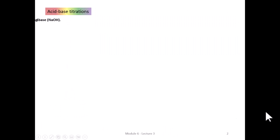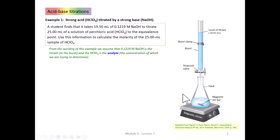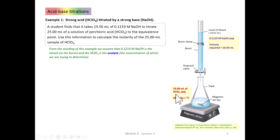Let's look at an example: a strong acid-strong base titration. A student finds that it takes 19.50 milliliters of 0.1219 molar sodium hydroxide — in the burette — to titrate 25 milliliters of a solution of perchloric acid in the flask to the equivalence point. We can use this information to calculate the molarity of the perchloric acid. The sodium hydroxide is in the burette; we know its concentration and the volume required to completely react with all the perchloric acid. We just don't know the molarity of the perchloric acid.